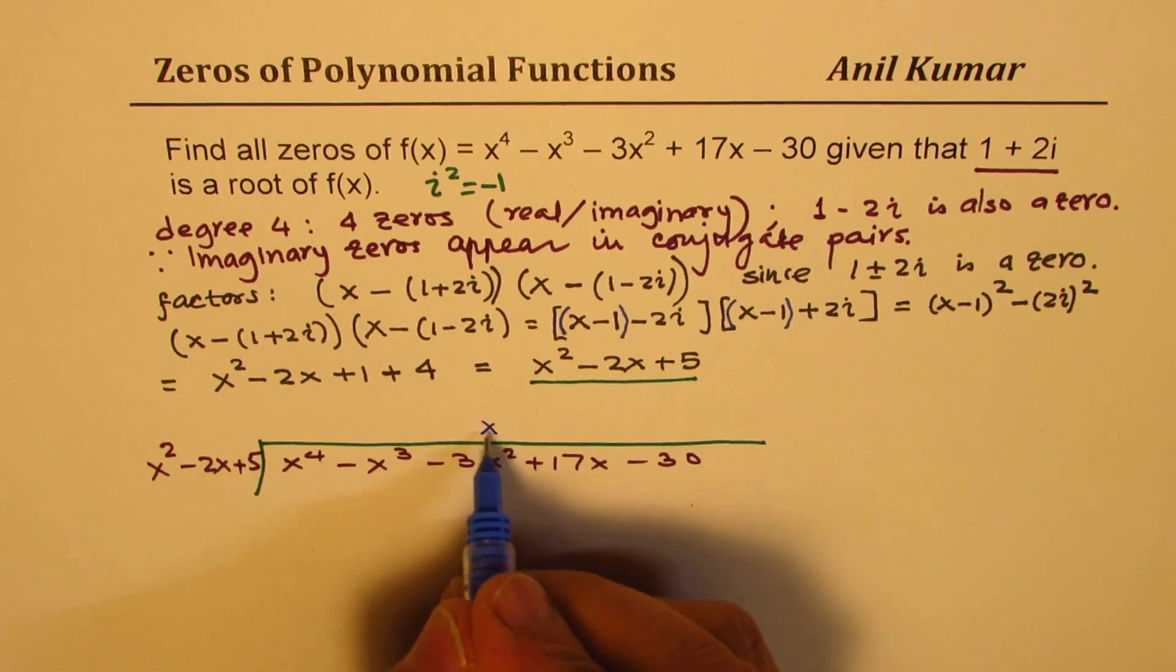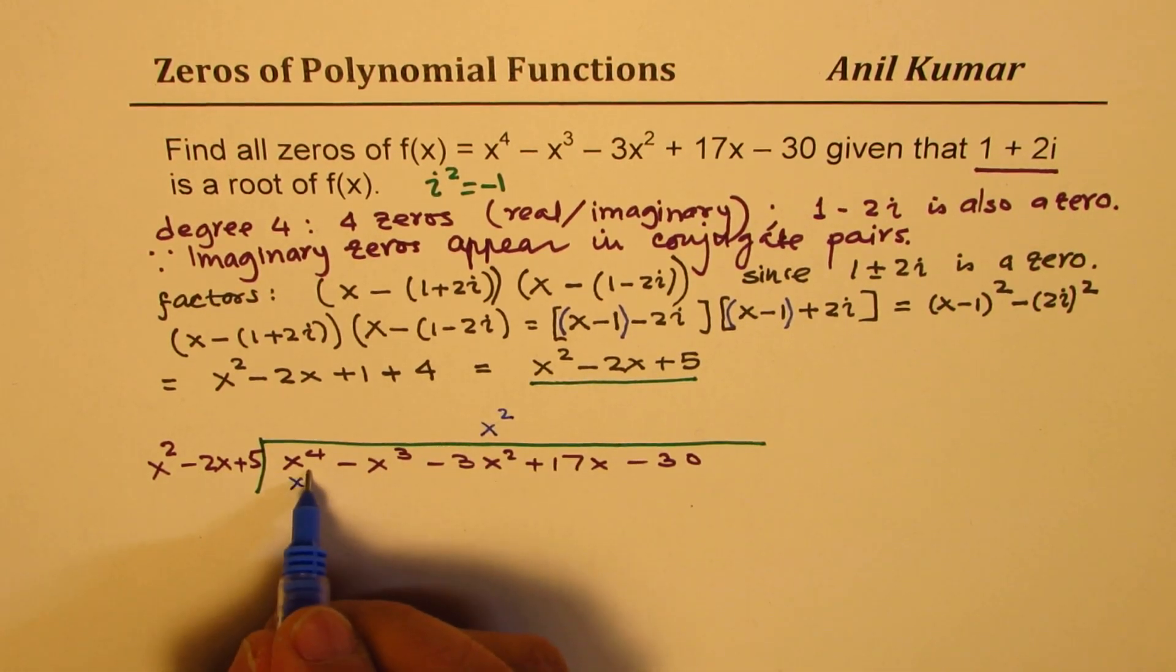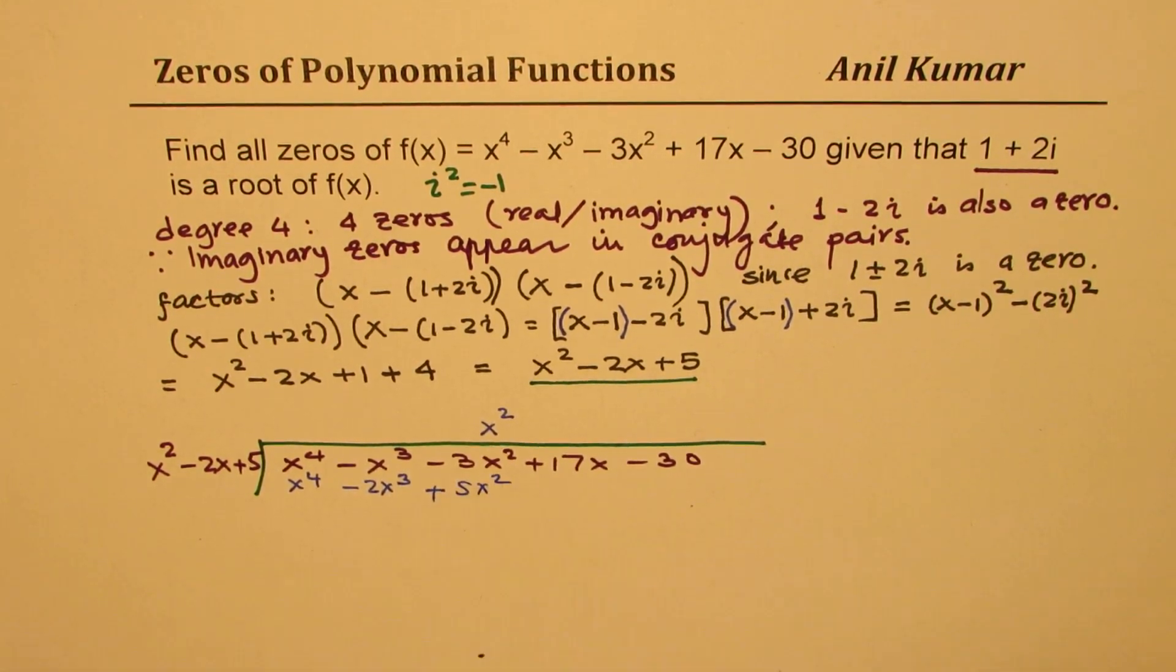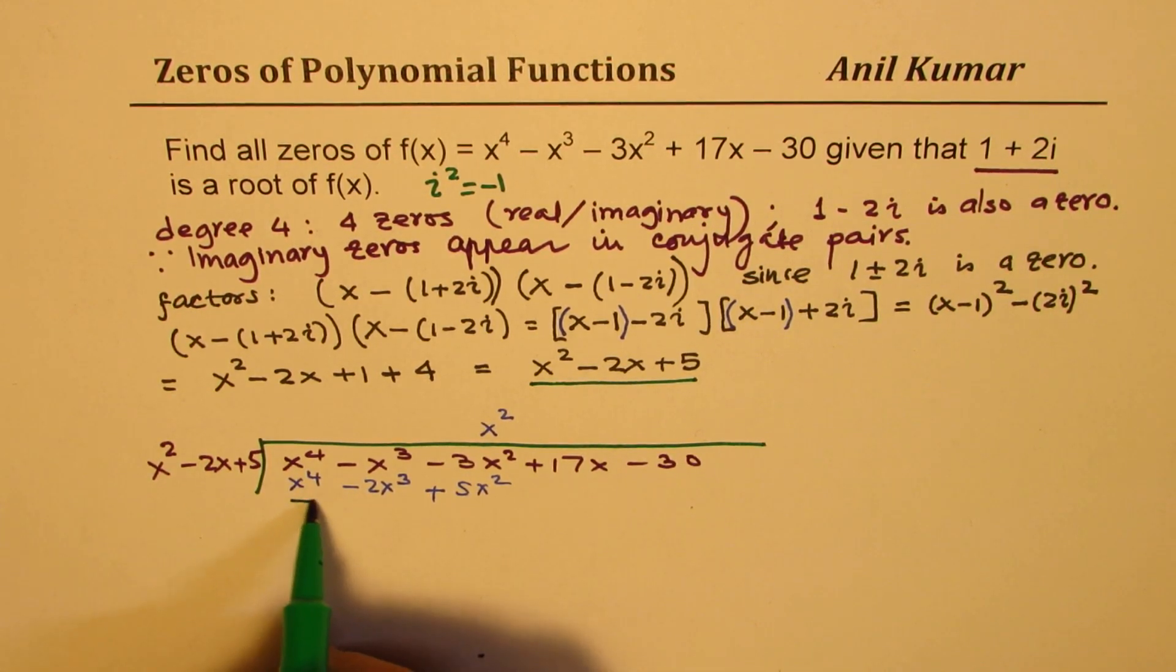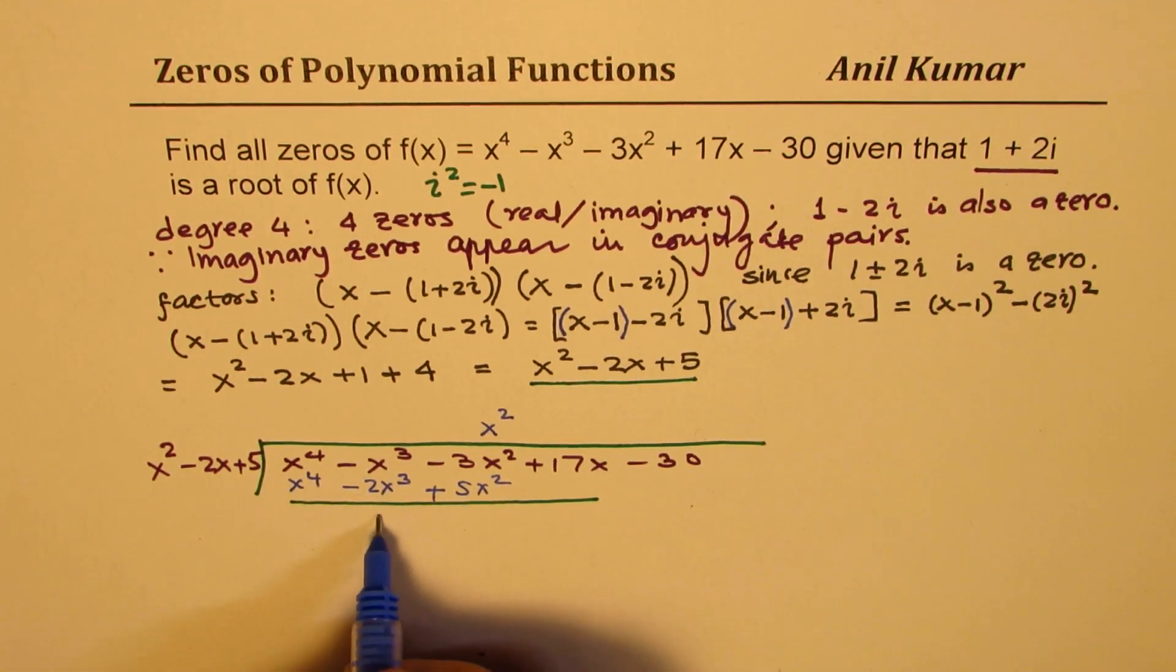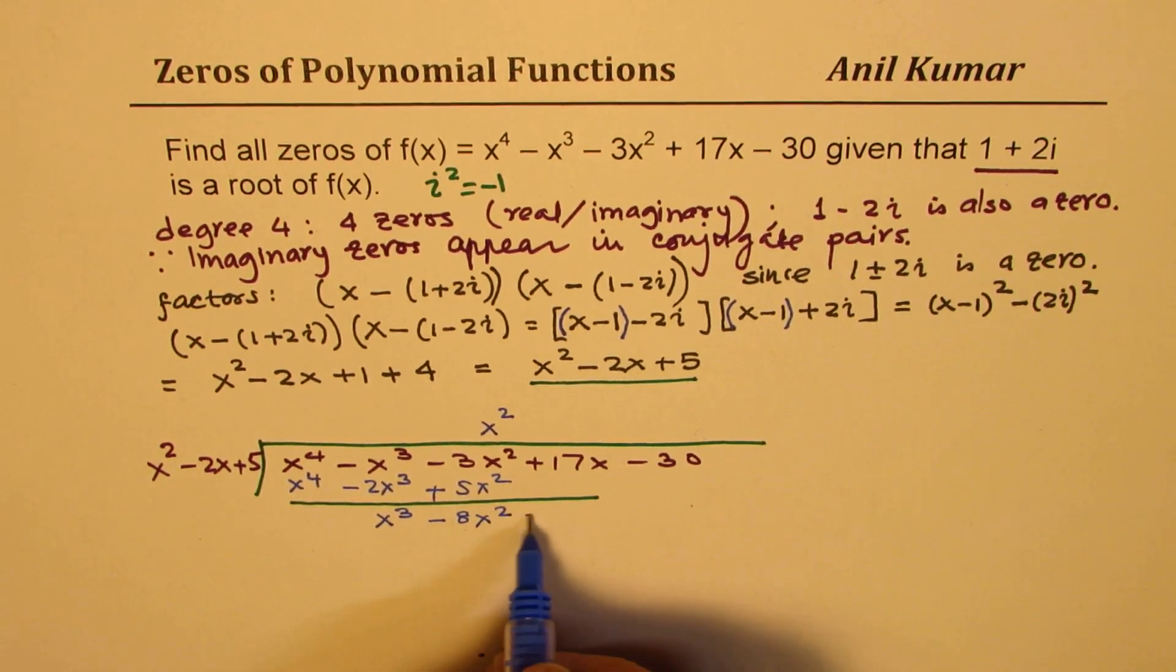We need to first multiply by x^2. That gives us x^4 - 2x^3 + 5x^2. Taking the difference, we get x^3 and here we get -8x^2. Bringing down 17x.